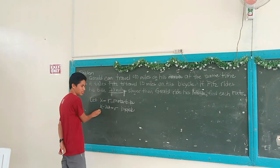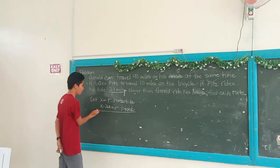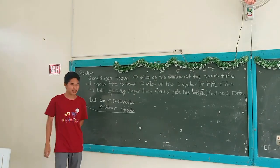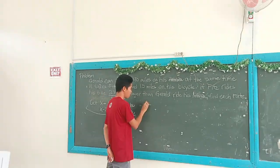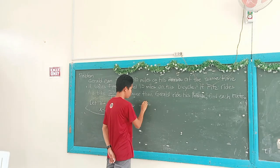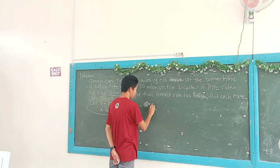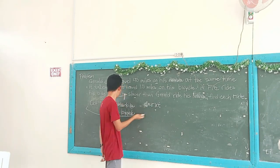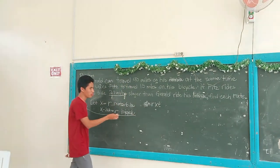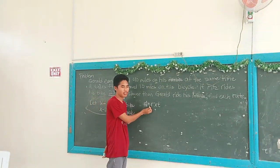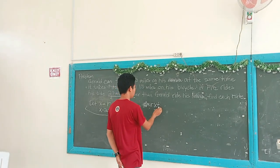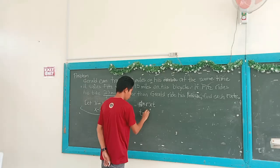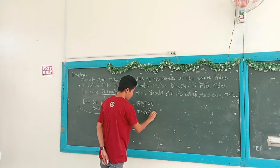This is our given information. Remember that distance is equal to rate times time. To solve this, we need to get the equivalent formula, which is: time is equal to distance over rate.